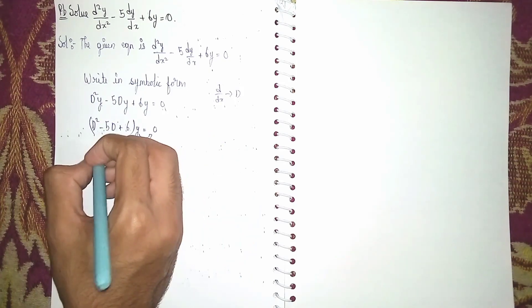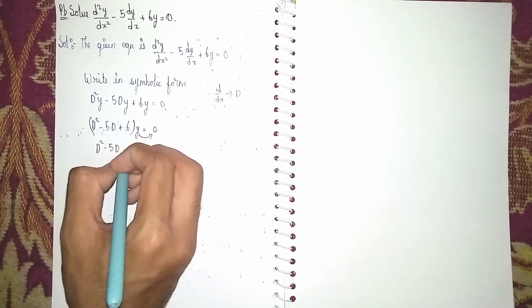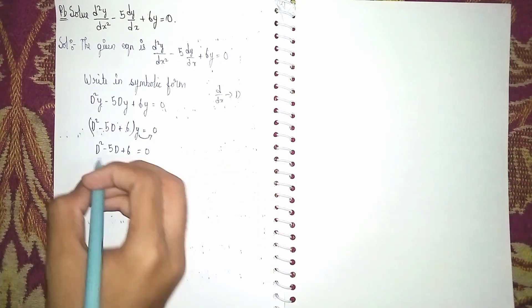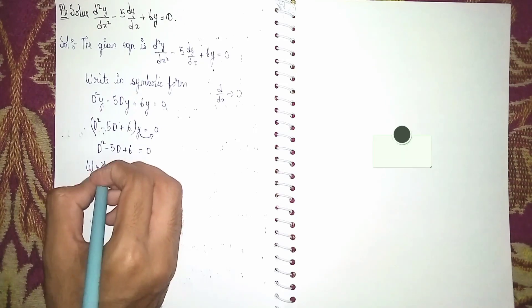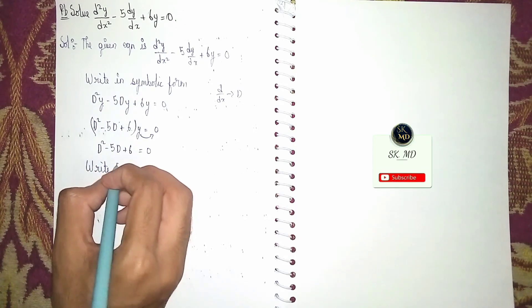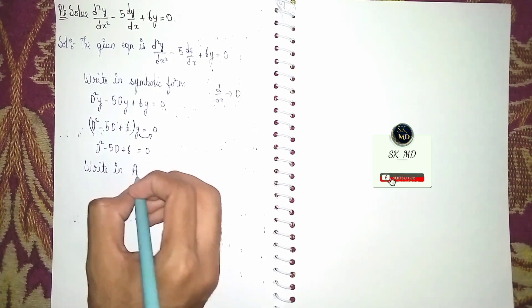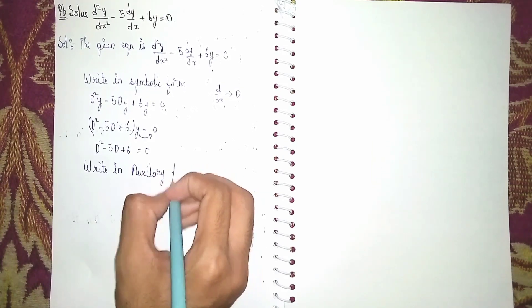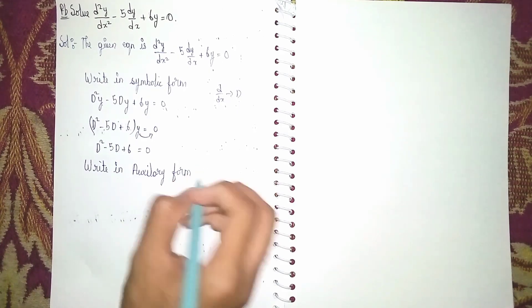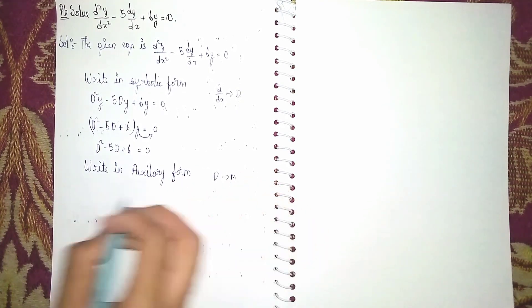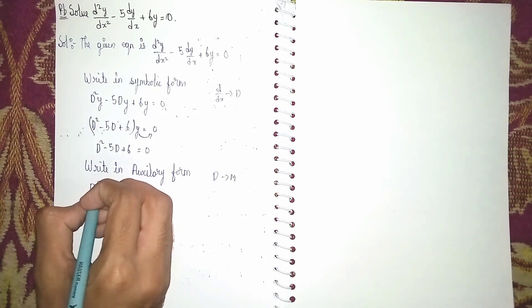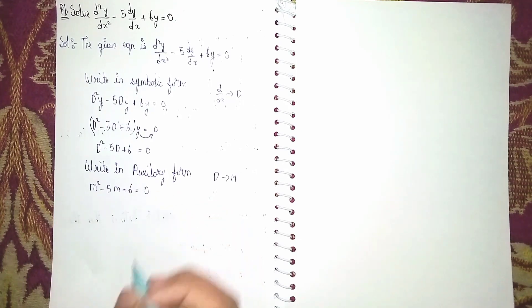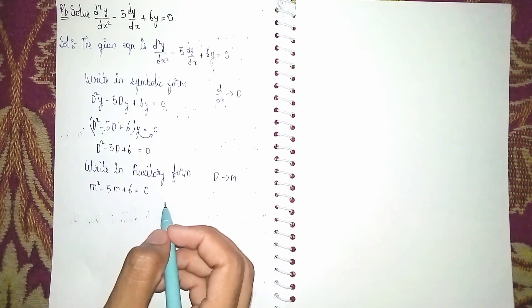Moving y to the other side gives us D² minus 5D plus 6 is equal to 0. Now write this in auxiliary form — instead of D we put m to find the roots. So it becomes m² minus 5m plus 6 is equal to 0.